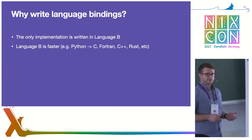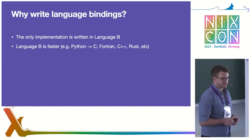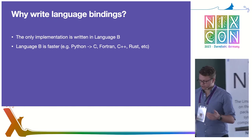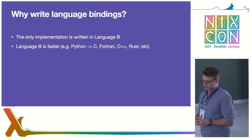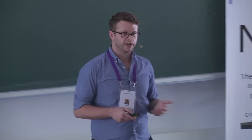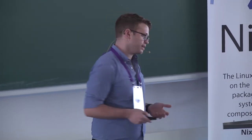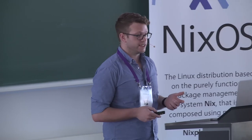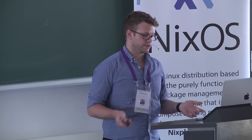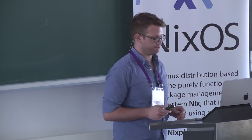Another reason is performance — language B is faster. A good example is the Python ecosystem, where a number of scientific and data science libraries are written in C, Fortran, whatever, and they're just a Python wrapper around that. I did this myself in my PhD doing quantum mechanics simulations. Wrote that in Rust, wrapped it in Python. Worked like a charm.